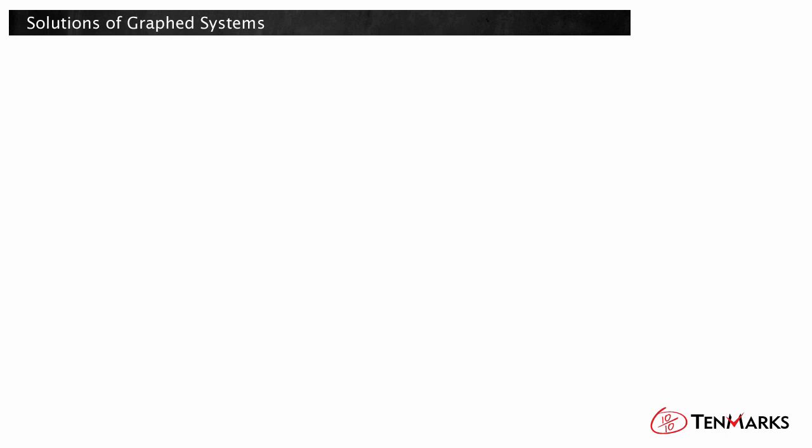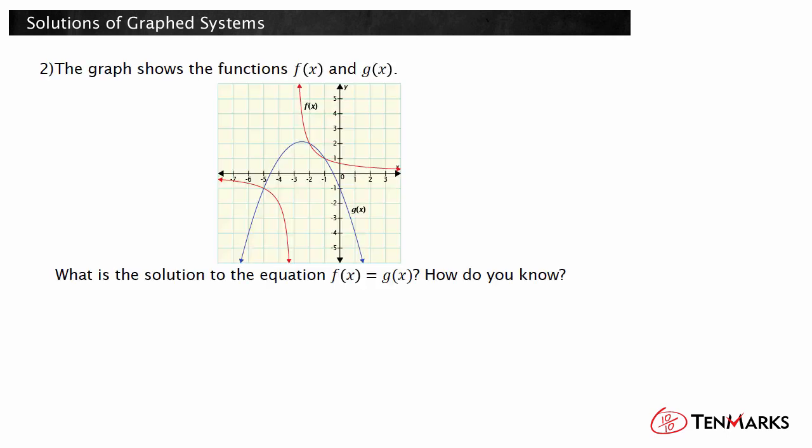Let's look at another example. The graph shows the functions f of x and g of x. What is the solution to the equation f of x equals g of x? How do you know? Since the question asks when f of x equals g of x, you need to find the x values at which the functions intersect. The functions will have equal outputs at those points of intersection. These functions intersect at three points: negative 5, negative 1; negative 2, 2; and negative 1, 1.